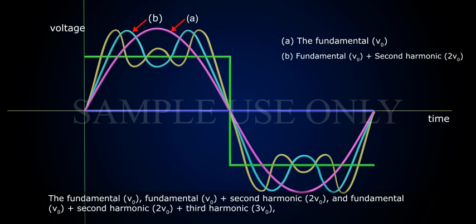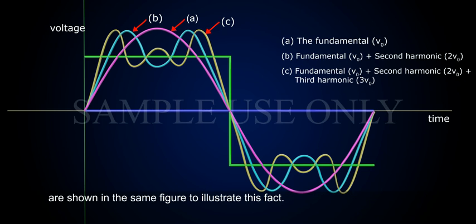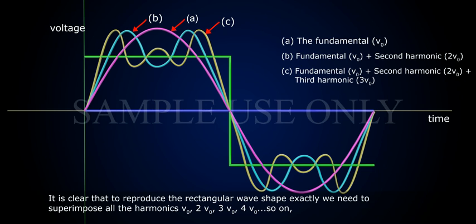The fundamental V0, fundamental V0 plus 2nd harmonic 2V0, and fundamental V0 plus 2nd harmonic 2V0 plus 3rd harmonic 3V0, are shown in the same figure to illustrate this fact. It is clear that to reproduce the rectangular wave shape